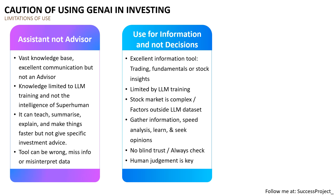Remember that the stock market is a very, very complex machine. It has many factors outside the data points of a Gen AI. So use it to gather information, speed your analysis, learn new concepts, or seek an alternate opinion — but you really cannot leave the final decision to the tool. Human judgment is the key. You have to make the decision.